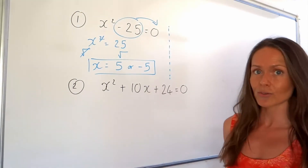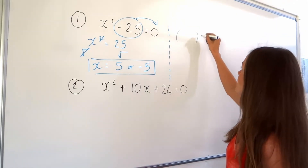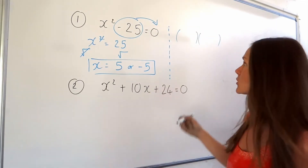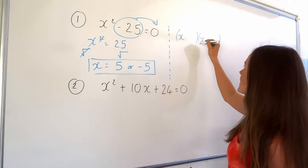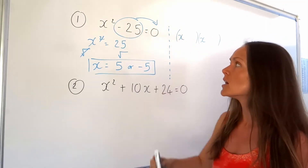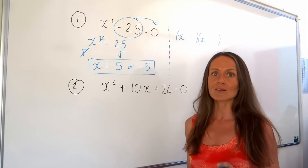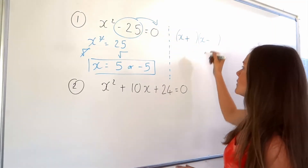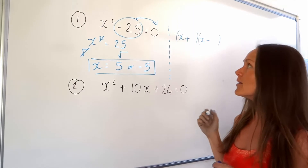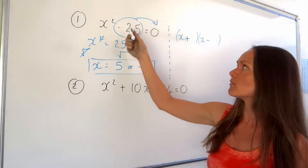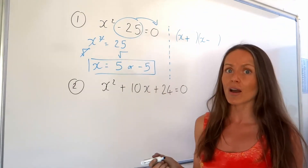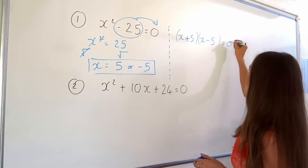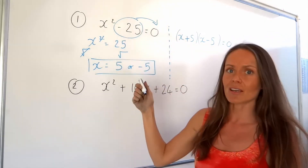Whenever you have the difference of two squares, remember you're factorising into double brackets. You can just pop the x values in, because x times x is going to be x squared. Inside the brackets, one sign is positive and one sign is negative — doesn't matter on the order. And then the number is just the square root of 25, which is 5. So I have factorised this quadratic.